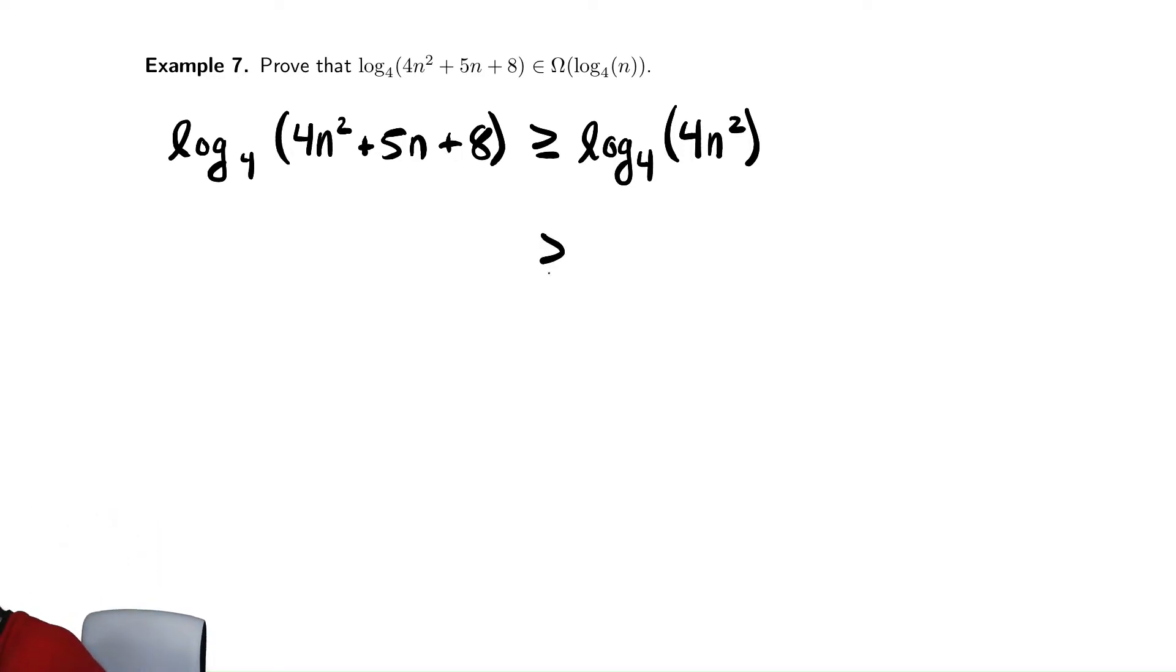So I bound this below again and drop the 4 inside of the log and write it as log base 4 of n squared. 4n squared is clearly bigger than n squared for any value of n, positive or negative even. So that is always true by reducing that value.